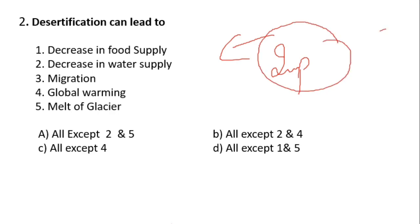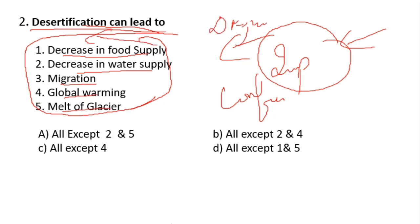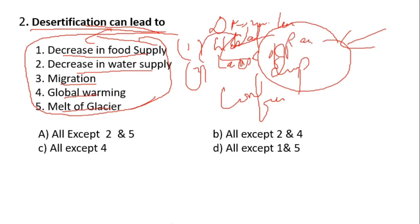This is one of the most important and confusing questions asked in different exams. Desertification can lead to — options are: decrease in food supply, decrease in water supply, migration, global warming, and melting of glaciers. Desertification refers to dryness in land areas. Global warming can be a reason, as can lack of rainfall.